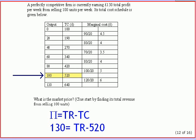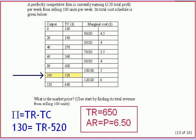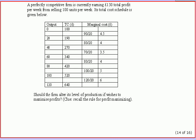For question 2 you are asked to calculate the market price, and you need to approach this in stages. At an output level of 100 units, the profit is £130 and the total cost of producing these 100 units is £520. Therefore total revenue must be £650 — that's 130 plus 520. Price equals average revenue, which is total revenue divided by quantity, so the market price must be £6.50 — £650 divided by 100 units.